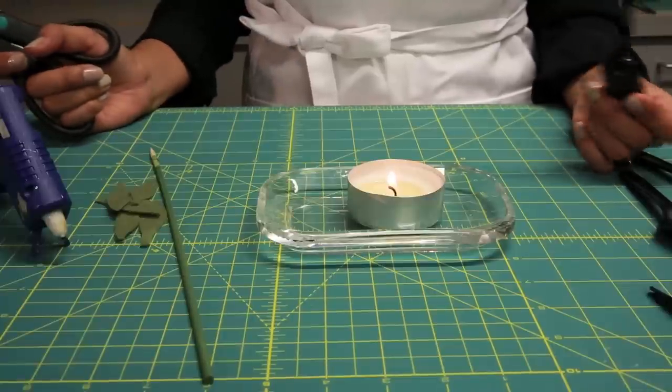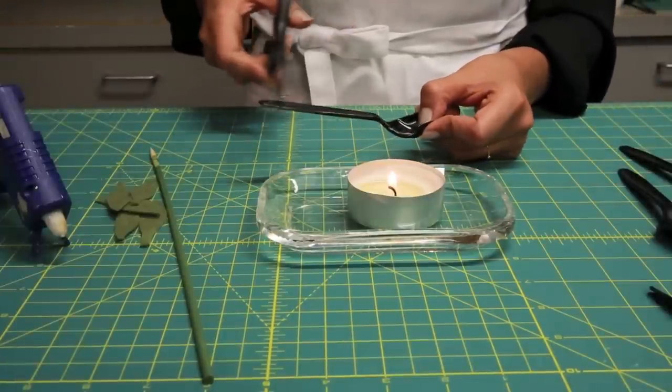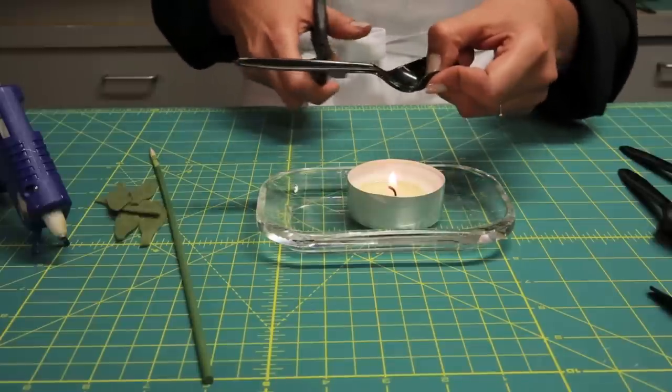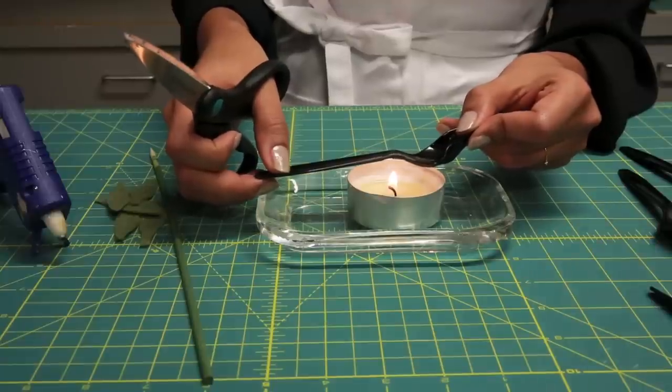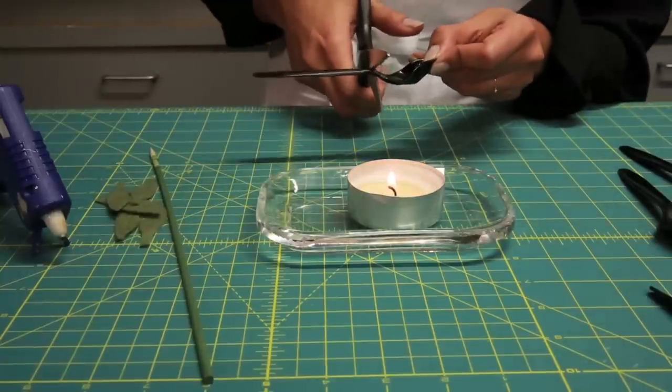After you've melted all of your spoons, you're going to want to cut off the stem of the spoon. By doing that, you would just melt right where it curves. Just keep it there for a little bit, and then just cut.